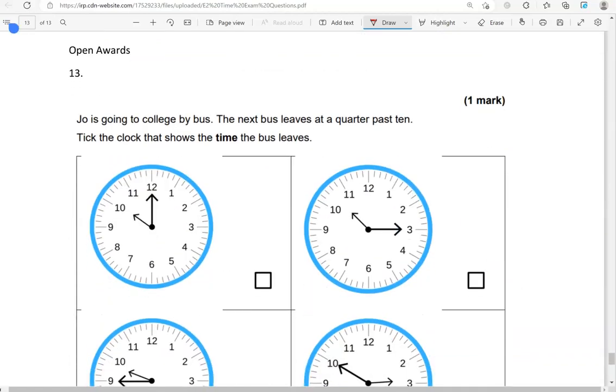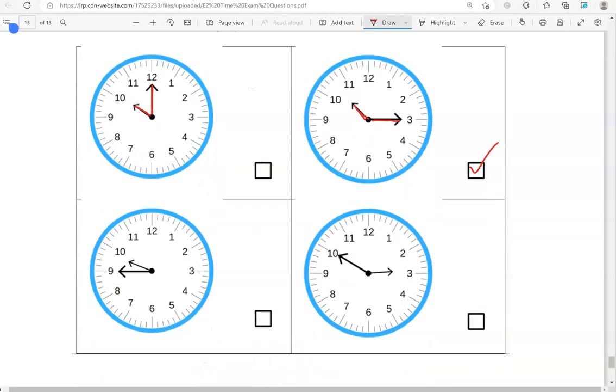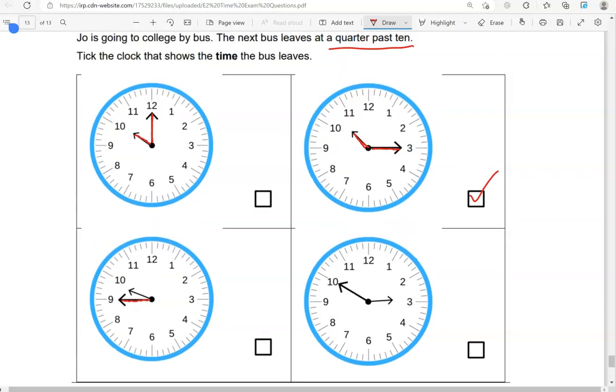Joe is going to college by bus. The next bus leaves at quarter past ten. Tick the clock that shows the time the bus leaves. So, quarter past ten. This is ten o'clock. This one is quarter past ten. The third clock shows quarter to ten. And the fourth one shows ten to three. So, the only correct option is the second one.